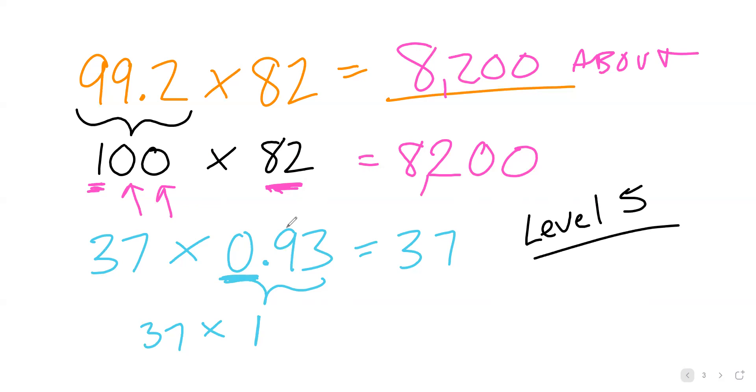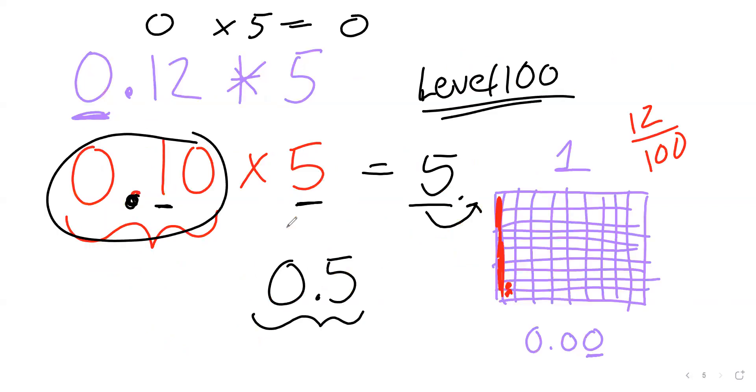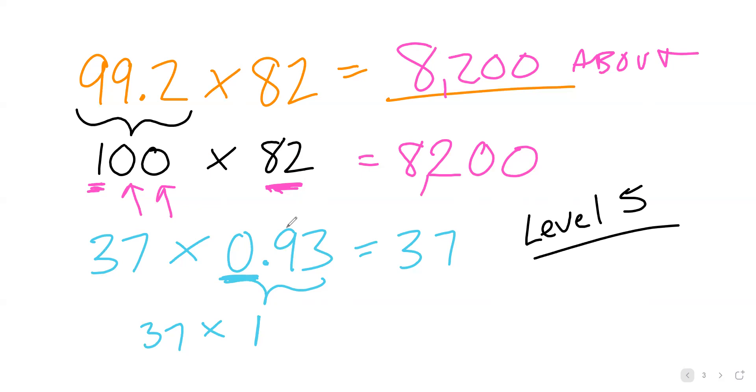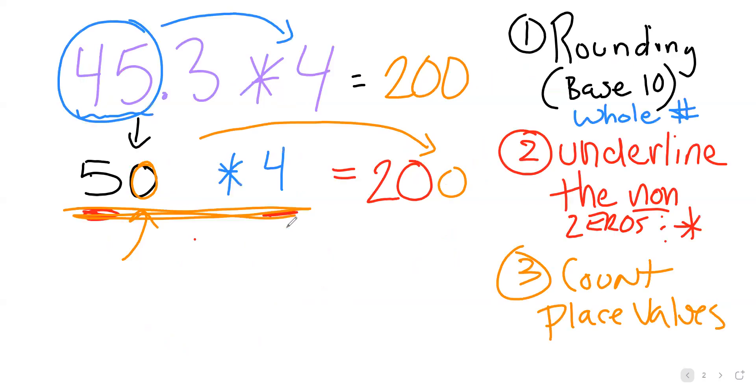So I don't want you to be discouraged if after that long talk on this one you're like, that makes no sense. Go back and think on that level 5 scale of thinking and you're going to be just fine. Do the work that we've talked about. Round the base 10 whole number, underline non-zeros, do that multiplication, count, put those place values in, and you're going to have a good estimation of multiplying decimals.